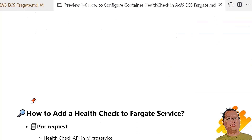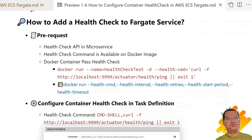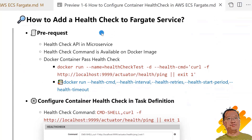We move to the next topic: how to add health check to Fargate service. There are three pre-requisites when we use a health check in Fargate service. Health check endpoints must be in our microservice, because the command is used by the health check parameter.